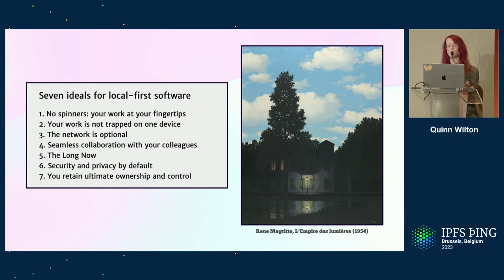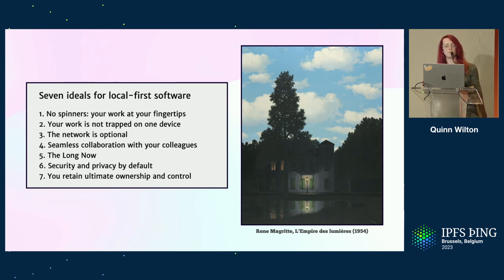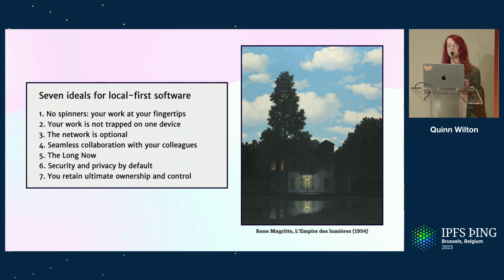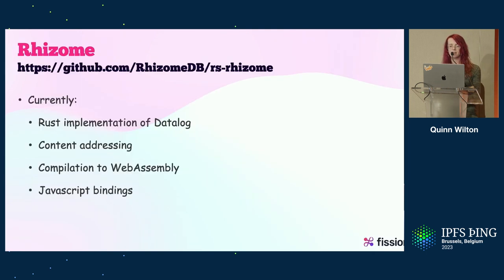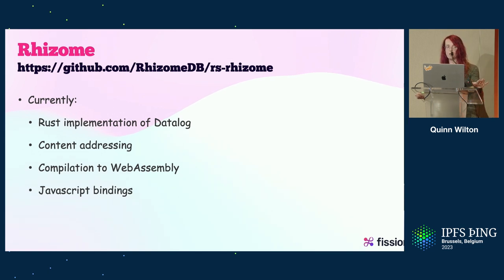The vision of Local First Software is of a world that empowers people to take back ownership of their data, freeing it from the tyranny of the cloud and of the centralized services that comprise it. In Local First Software, a user's device is the central source of truth, with data all being stored locally and with a hard dependency on the network being severed. Instead, Local First Software embraces eventual consistency and makes use of techniques like conflict-free data types to synchronize data between devices. It's exactly this niche that Rhizome is being built for, and we currently have a working prototype implemented in Rust that compiles down to WebAssembly to run in a browser or to native code for backend and desktop deployments.